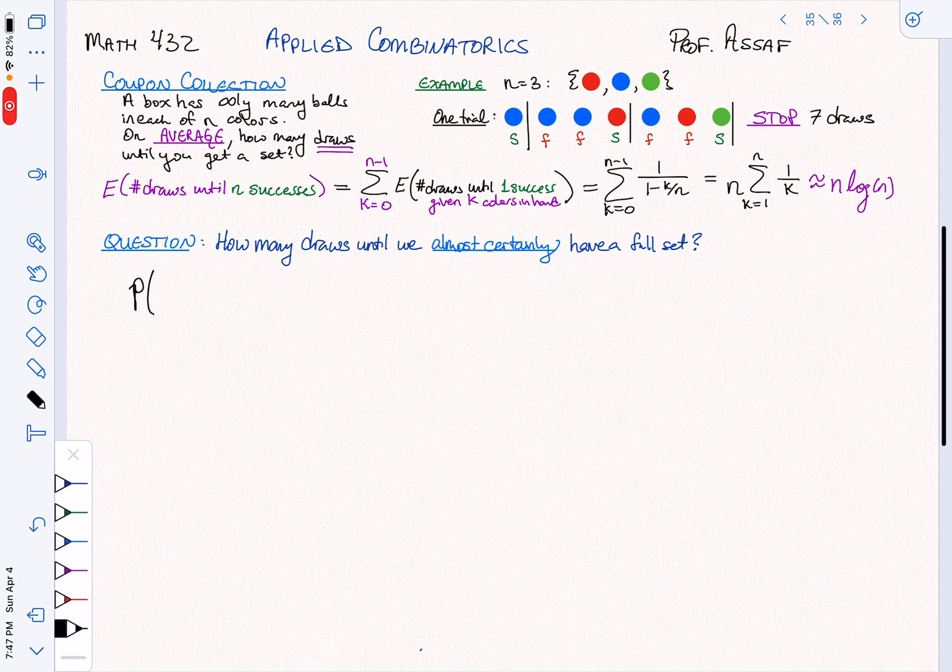Probability of what? Well, it's usually easier to say the probability that I fail to do something. Let's suppose we never get Dumbledore, or let's say the ith color, and we need to know in how many trials—in n draws.